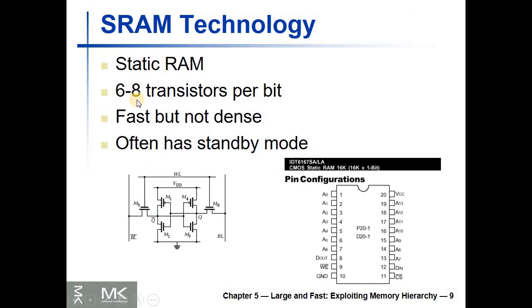Static RAM is typically built using six to eight transistors per bit. Each cell that can store one bit is six to eight transistors. Here we have six transistors. It is fast but not dense. We'll see later that DRAM is made using only one transistor.